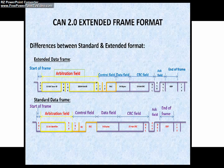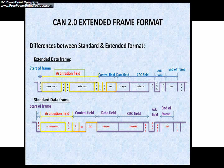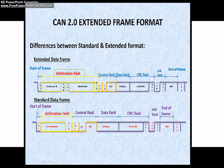Now let's understand the differences in the arbitration field in comparison with the standard frame format of CAN. As you already know, the standard frame format arbitration field comprises of an 11-bit identifier and RTR bit. But the extended format of CAN comprises of an 11-bit ID referred to as base ID, an 18-bit extended ID, the SRR bit, IDE bit, and RTR bit.